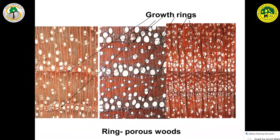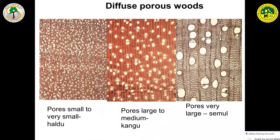This is ring porous wood. Teak is there, Lagerstroemia is there, Morus alba is there — here you can make out growth rings. Every year one ring will form. The early wood and late wood pattern we can also make out. Whereas in diffuse porous woods, even though a growth ring is there, there is no differentiation of vessels.